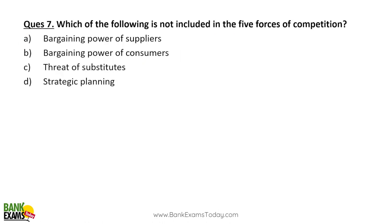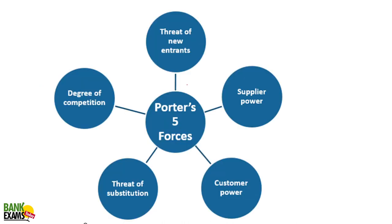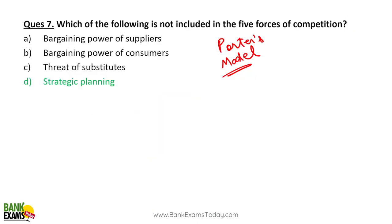Next question: Which of the following is NOT included in Porter's Five Forces of competition? The five forces in Porter's model are: threat of new entrants, supplier power, degree of competition among existing competitors, threat of substitution (e.g., tea is a substitute for coffee), and customer power. Strategic planning is NOT one of the five forces.